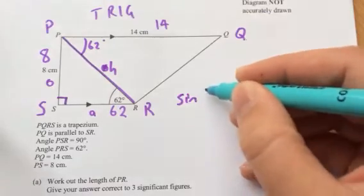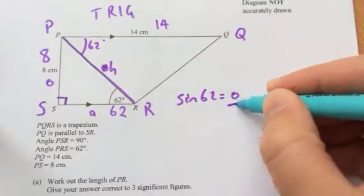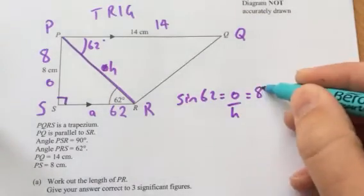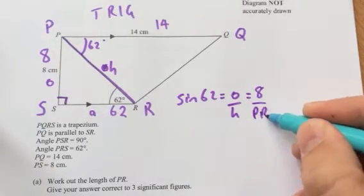So that'll be sine. Sine of 62 is opposite over hypotenuse, which is 8 over, in this case, PR.